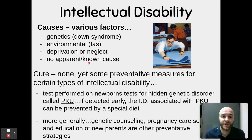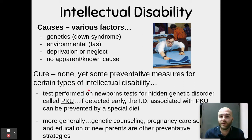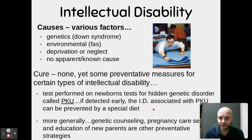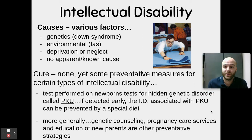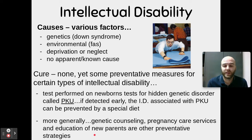There is currently no cure for intellectual disability, but there are preventative measures for certain types. Tests performed on newborns can detect hidden genetic disorders such as PKU, where infants can't process protein. If detected early enough, a special diet can be implemented to avoid the associated intellectual disability. More generally, genetic counseling before or during pregnancy, pregnancy care services, and education for new parents can help improve the odds that intellectual disabilities can be avoided.